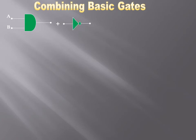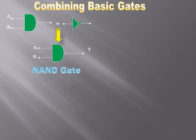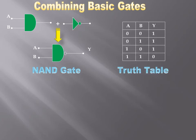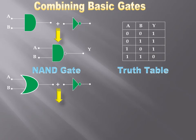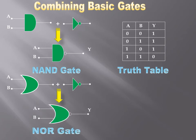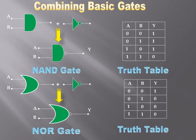We can combine basic gates. If we connect a NOT gate after an AND gate, it forms a NAND gate. The truth table of the NAND gate is the negation of the AND gate — the output is low only when all inputs are high. Similarly, combining an OR gate and a NOT gate gives a NOR gate. The output of a NOR gate is high only when all of its inputs are low.